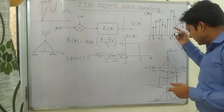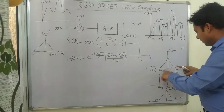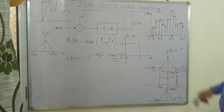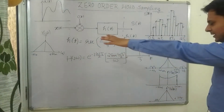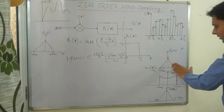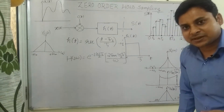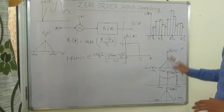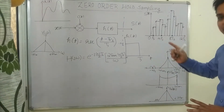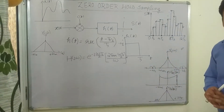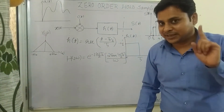Now let's look at reconstruction. In the frequency domain, S(jω) shows one replica from −ω_m to +ω_m. Comparing with ideal sampling, in ideal sampling we had no distortion, but here we have some distortion. However, a positive point is that in zero-order hold there is only one replica, whereas in ideal sampling we had many replicas on both sides.